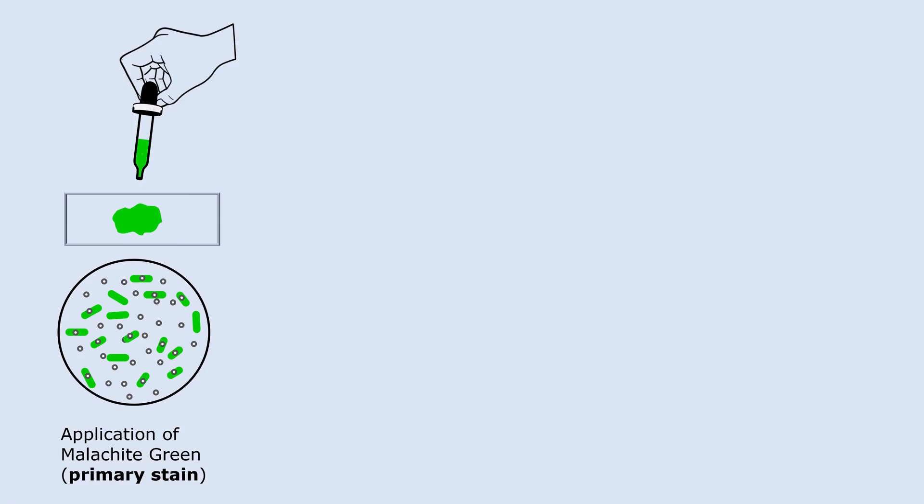But endospores and pre-endospores have a thick multi-layered protective coat made of keratin-like proteins. This coat is impermeable to most stains at room temperature. Therefore, they do not take up the stain effectively, so endospores remain unstained or very faint.